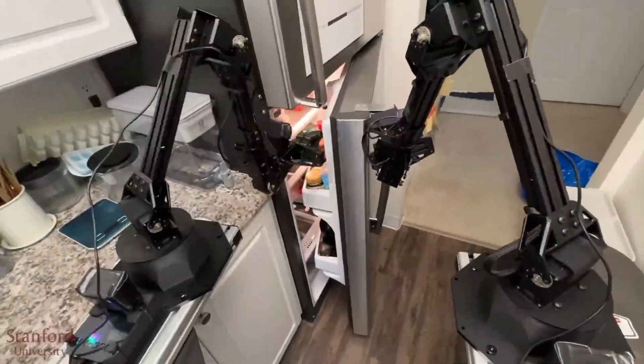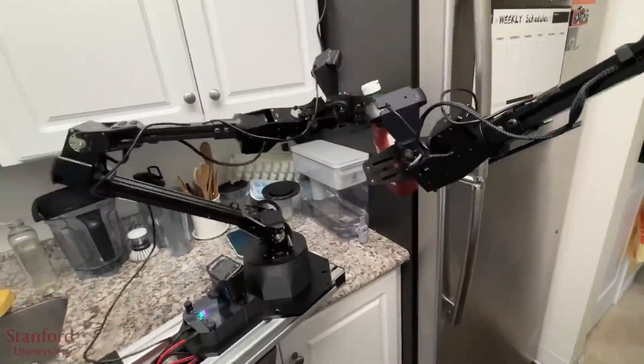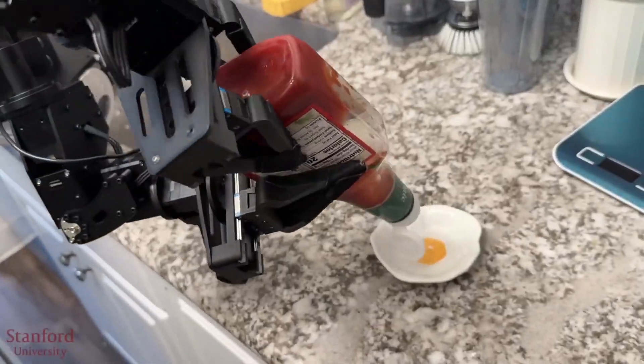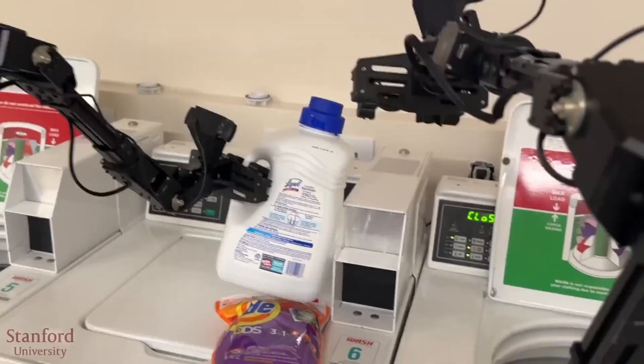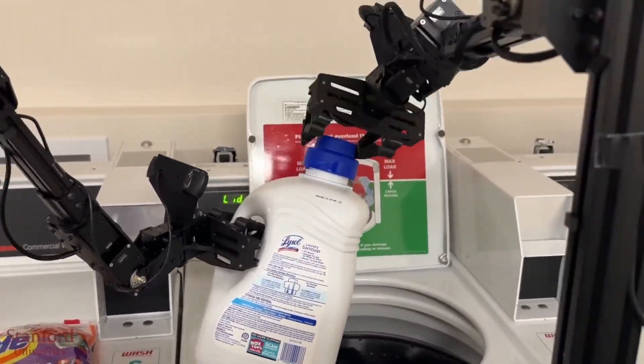When presented with a task, the two-handed robotic system will learn the necessary steps to accomplish it by analyzing the data gathered from human demonstrations, just as you can see here as it cracks an egg.